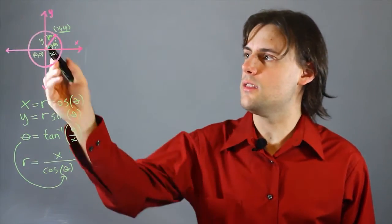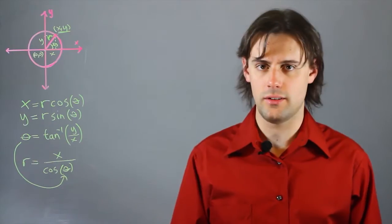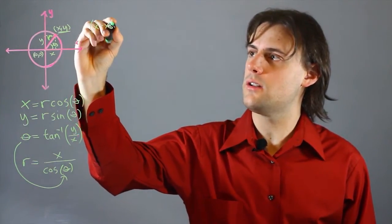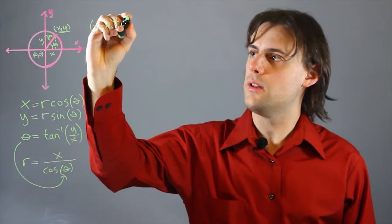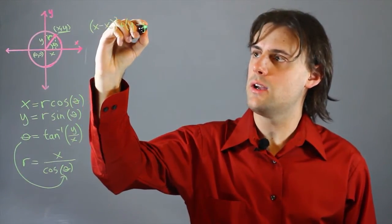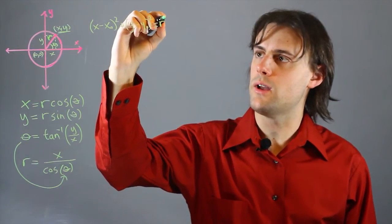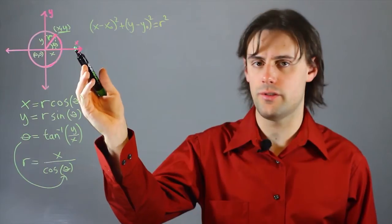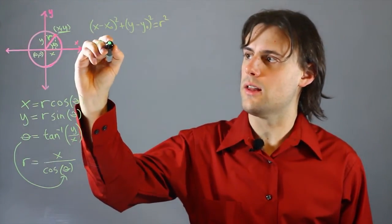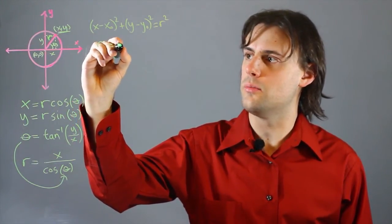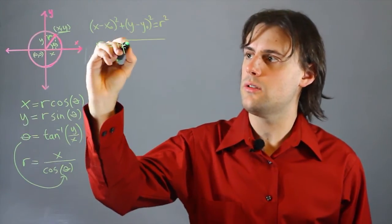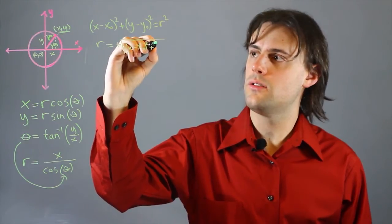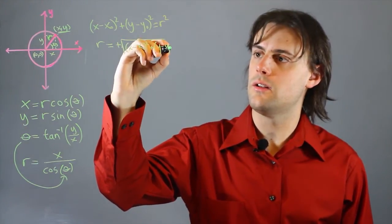Alternatively we can look at the equation for the circle in standard form which is given by x minus x0 squared plus y minus y0 squared is equal to the radius squared. When I solve this equation for r I'm interested only in positive values. So I have r is equal to positive square root of x minus x0 squared plus y minus y0 squared.